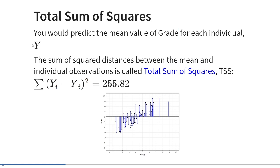There are two interesting things to notice about the null model. First, this model only has one coefficient — the intercept a — and this coefficient is just the mean of the outcome variable y. The prediction errors are still assumed to be normally distributed with a mean of zero, distributed around the mean now subsumed by intercept a, and their standard deviation is just the standard deviation of y. Essentially, the null model just describes the mean and standard deviation of the outcome variable. We can calculate a sum of squares around that mean value, called the total sum of squares, or TSS for short.